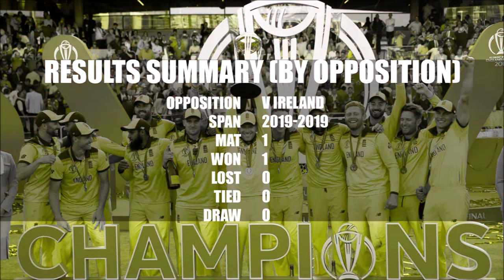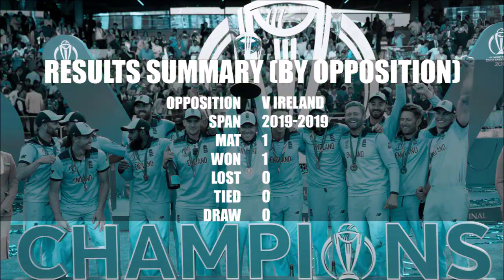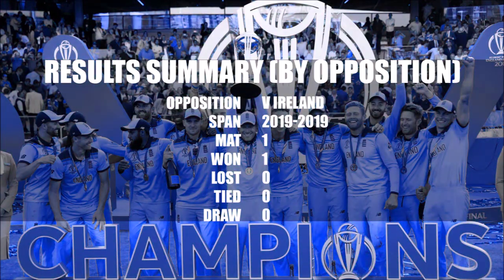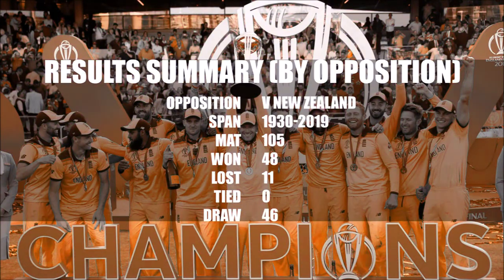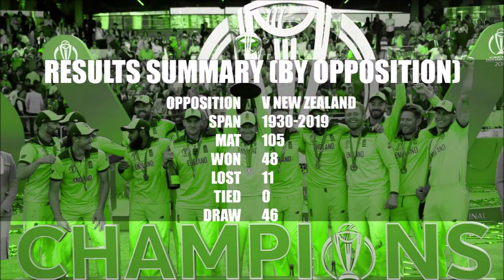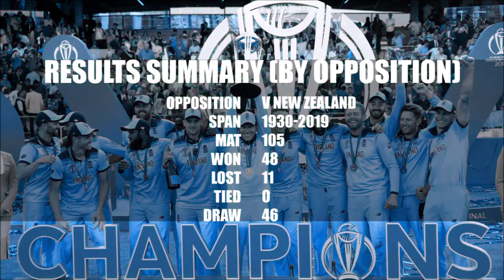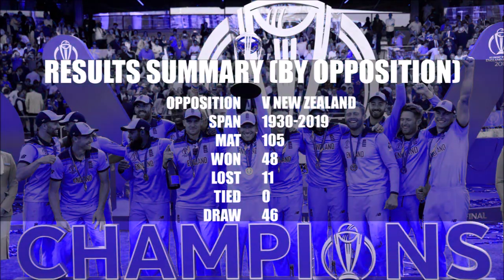Results summary against Ireland: Span 2019 to 2020, matches played 1, won 1, lost 0, drawn 0. Results summary against New Zealand: Span 1930 to 2020, matches played 105, won 48, lost 11, drawn 46.